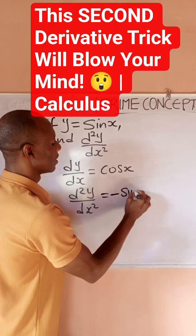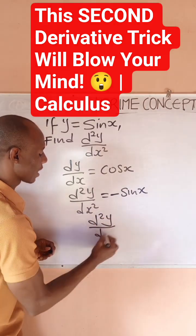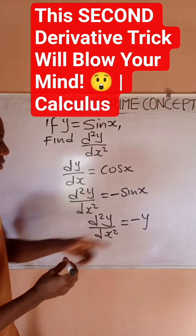I have minus sine x. So this simply means that the second derivative is equal to negative y.